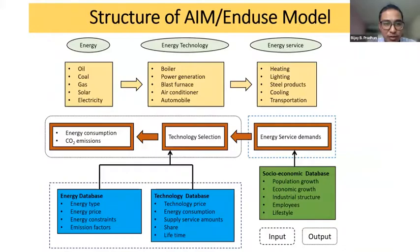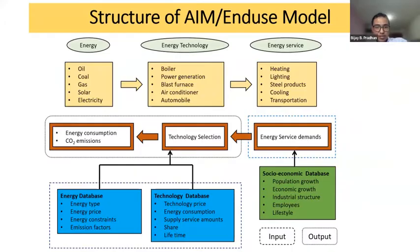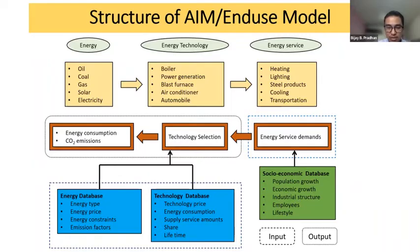This figure shows the structure of the MUSE model. In the MUSE model, we can make a detailed representation of energy flow, energy technology, and energy service. The energy service demand is given exogenously to the model, and the model selects the combination of technologies to fulfill an energy service demand under the given constraint by minimizing the total system cost.